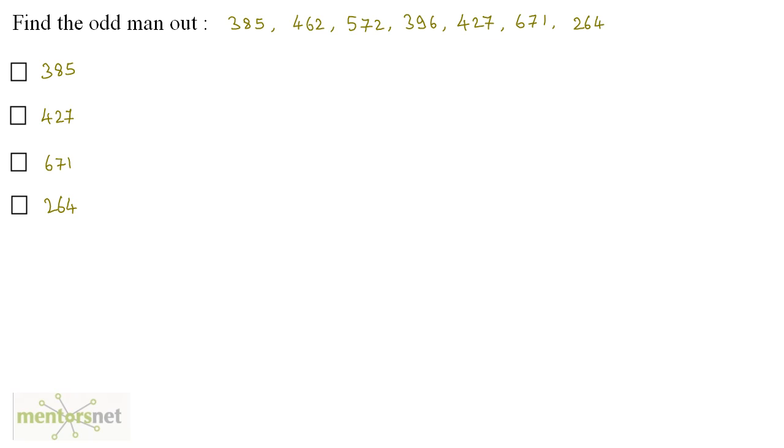Which one could be the odd man out in this list of numbers? Well, this one might seem a little bit tricky. If you observe very carefully, you will see that all of these are three digit numbers in the form of x, y, z. And in most of the numbers, you will get y equals x plus z. That means the middle digit is the addition of the digits on its sides.